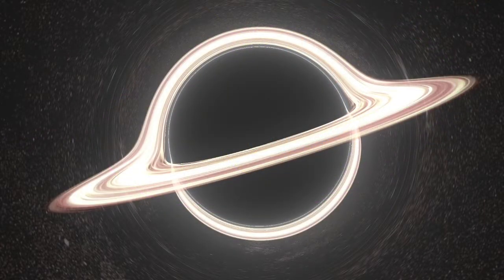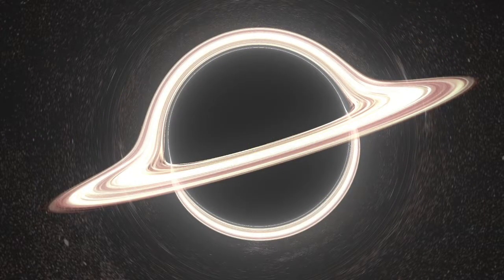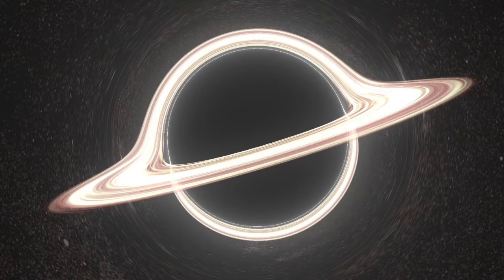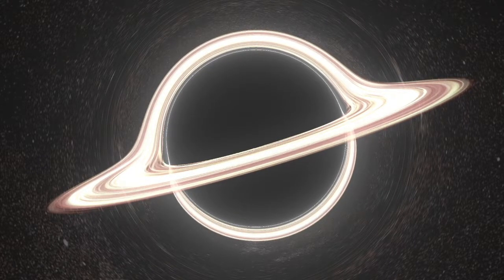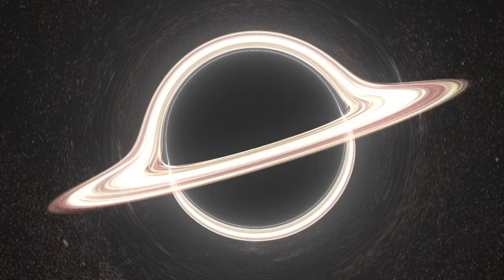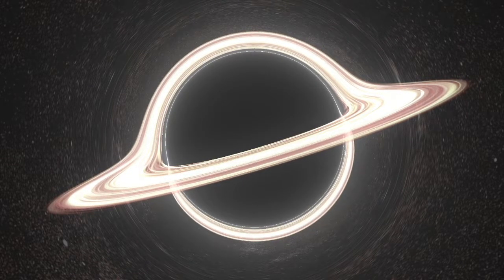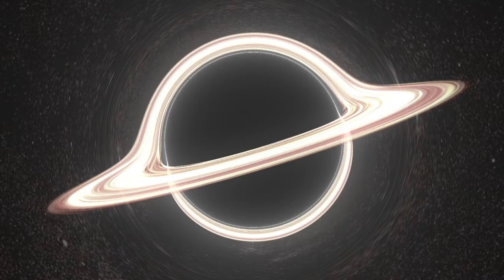The region closest to a stationary observer is called the photon sphere where photons, light particles, rotate around it causing what is known as gravitational lensing. In theory, the photons are bent in their paths so much that you could theoretically see the back of your own head.